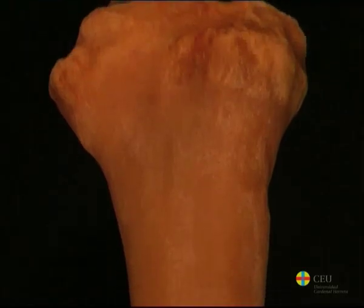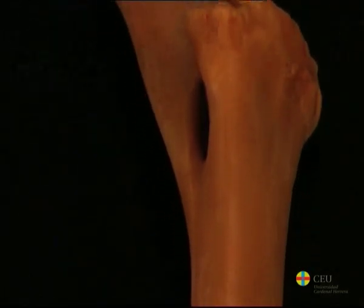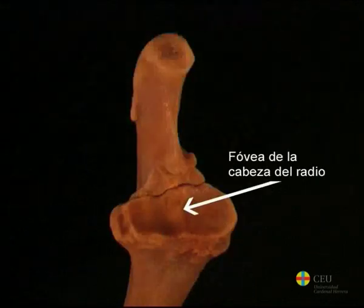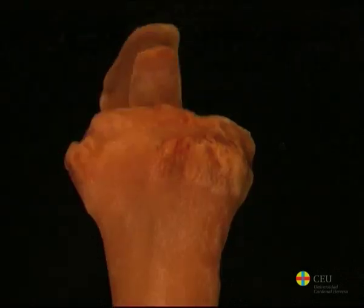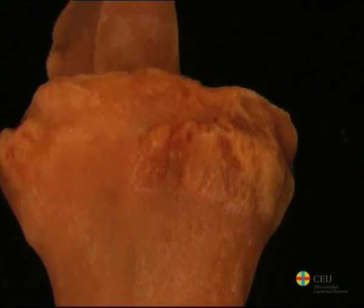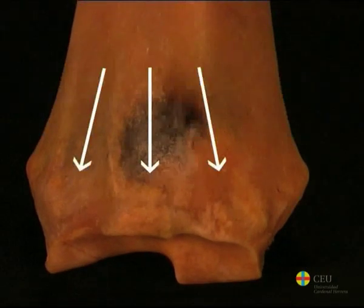The radius is a simple rod-shaped bone, cranially compressed and slightly arced. The fovea of the radius head, which articulates with the humerus, is located at the proximal extremity. Also in this region, the collateral ligaments insert, and in the medial border, the radial tuberosity is where the biceps brachii muscle inserts. The most distal part of the body, which is more expanded, has three grooves in its cranial surface for the passage of tendons of the extensor muscles.